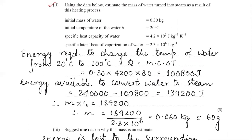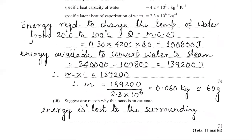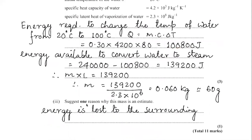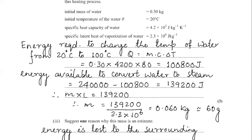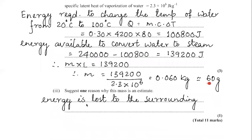So to summarize: they asked how much mass of water turned into steam. I found the heat required to change water from 20°C to 100°C, subtracted it from the total heat energy supplied (2.4 × 10⁵ J), getting 139,200 J remaining. Dividing by the latent heat of vaporization (2.3 × 10⁶ J/kg) gives approximately 60 grams.